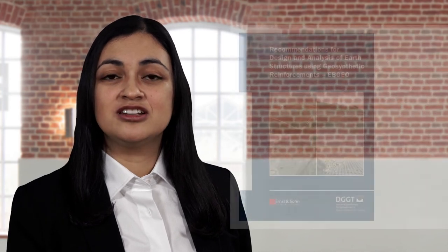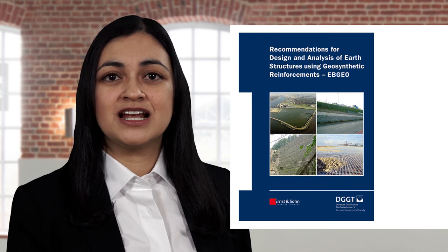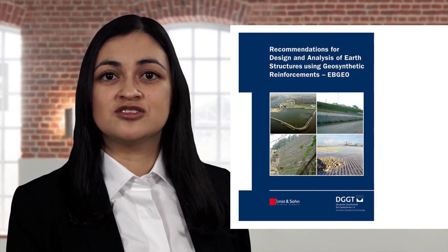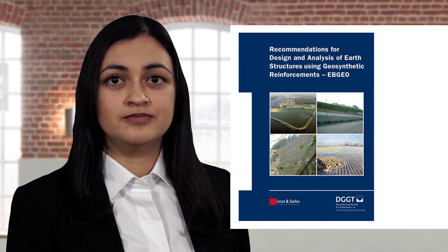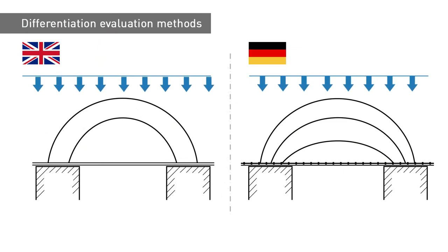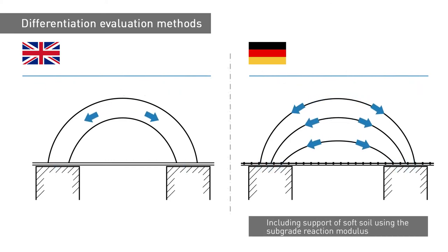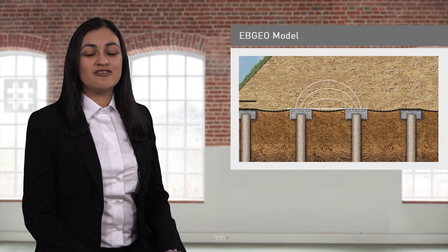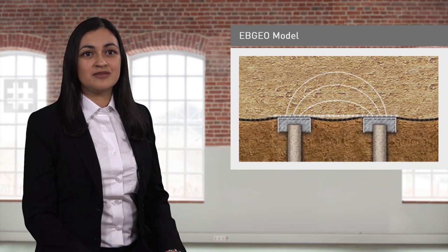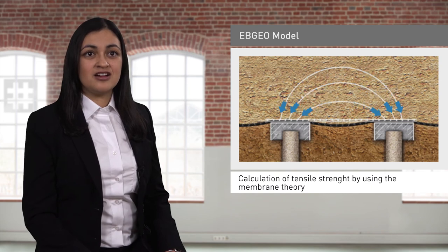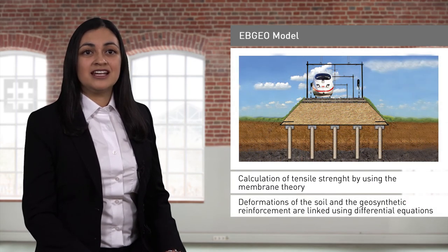The model used in Germany is described in a document of the German Geotechnical Society — Recommendations for Design and Analysis of Earth Structures Using Geosynthetic Reinforcement — that defines commonly accepted design and construction best practices. The German analytical model differs from the British one in the way the redistribution of stresses is defined, which consists of multiple arches including support of soft soil using the subgrade reaction modulus. The calculation of tensile strength of geosynthetic reinforcement is carried out using the membrane theory, with the difference that in the German model the deformations of the soil and the geosynthetic reinforcement are linked using differential equations.